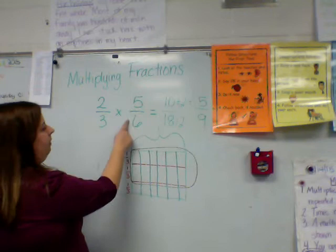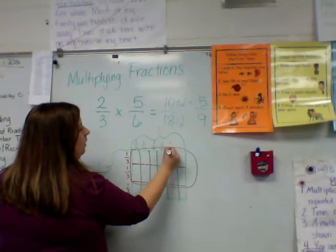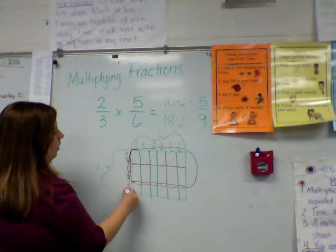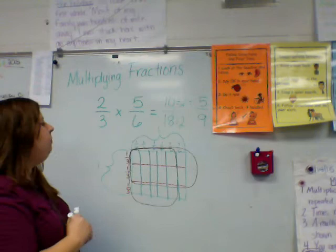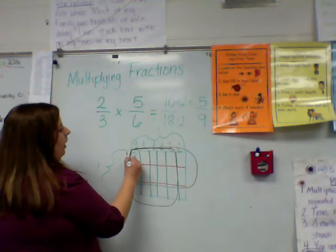I need five of those six pieces. Each column is worth one-sixth, so I need five of them — one, two, three, four, five — and I'm going to circle those. Now the squares that are in both circles, from our first side and our second side, are going to be the numerator of our fraction.